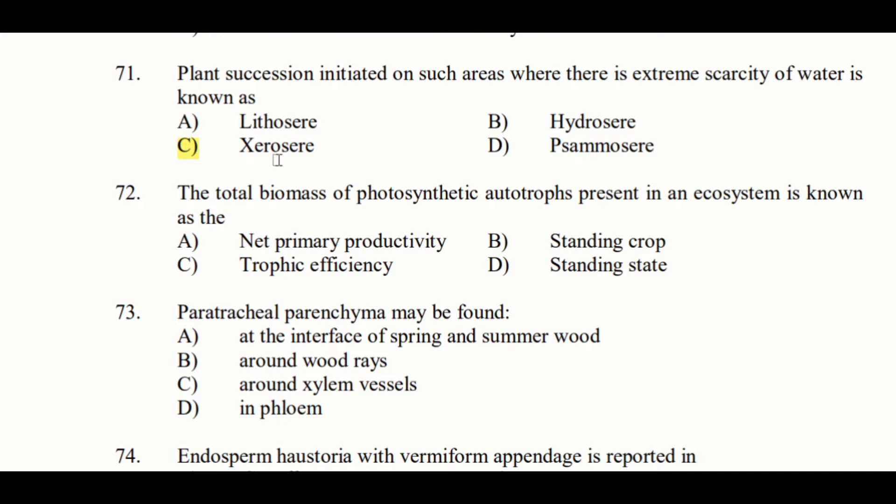Oxylsere is succession in acidic water or acidic soil. Hallosere is succession in saline water or saline soil. Mesosere is succession in a moderately moist land region. Xerosere is succession in a dry habitat, bare rocks, or dunes.